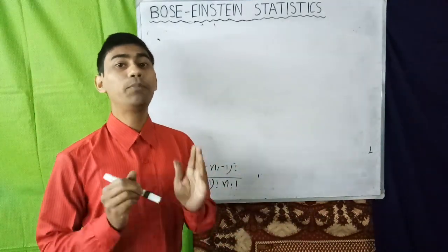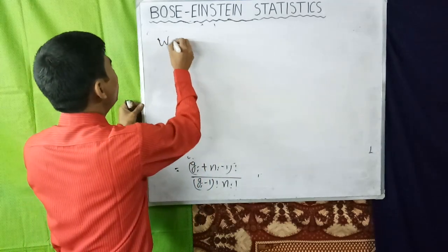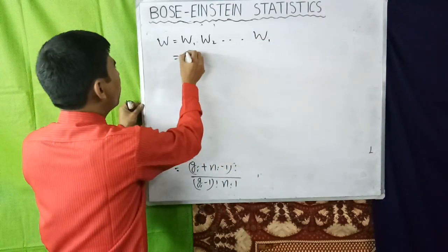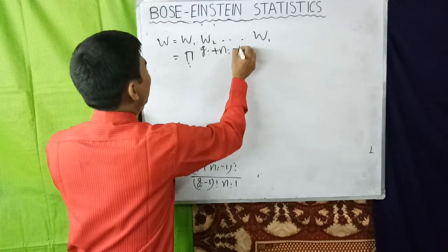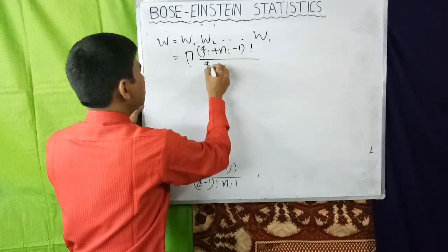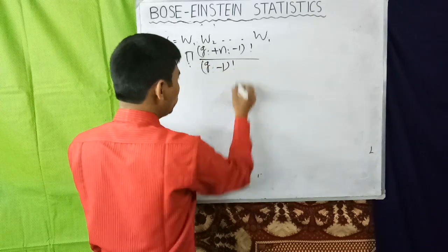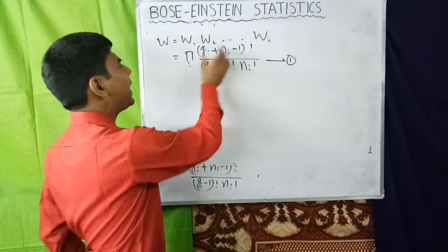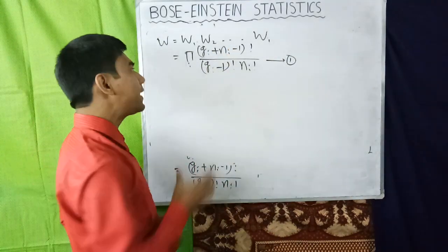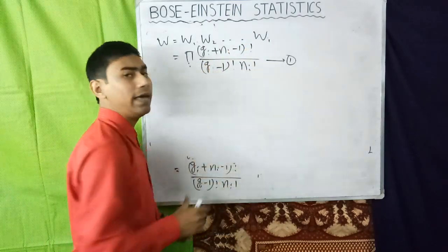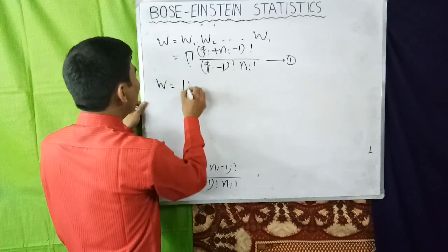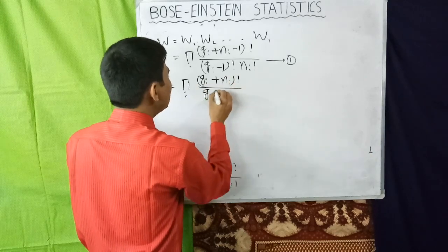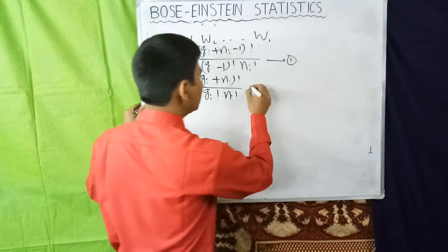So the thermodynamic probability of the said macro state is W = ∏ᵢ (Gᵢ + Nᵢ - 1)! / [(Gᵢ - 1)! · Nᵢ!]. Suppose this is equation 1. Now here Gᵢ and Nᵢ are both very large numbers, so we neglect 1 from the relevant terms, and equation 1 can be written as W = ∏ᵢ (Gᵢ + Nᵢ)! / (Gᵢ! · Nᵢ!). Suppose this is equation 2.